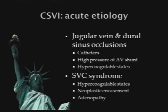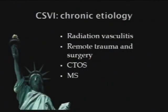I'm going to try to not use the word MS in this lecture. I think we need to, as Dr. Salvi was suggesting, not make this about MS anymore. But there is CCSVI in the chronic cases. It is a chronic condition that does lead to chronic CCSVI. Radiation vasculitis has caused CCSVI. Remote trauma and iatrogenic ablation of the veins also leads to an obstructive process that leads to deficits.